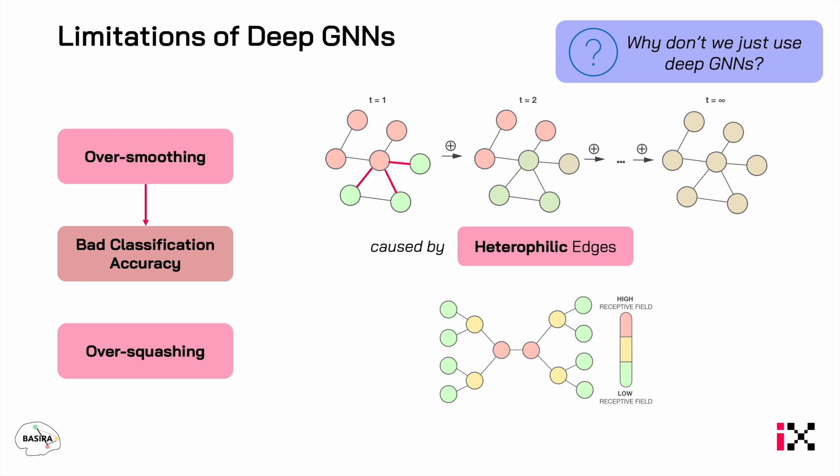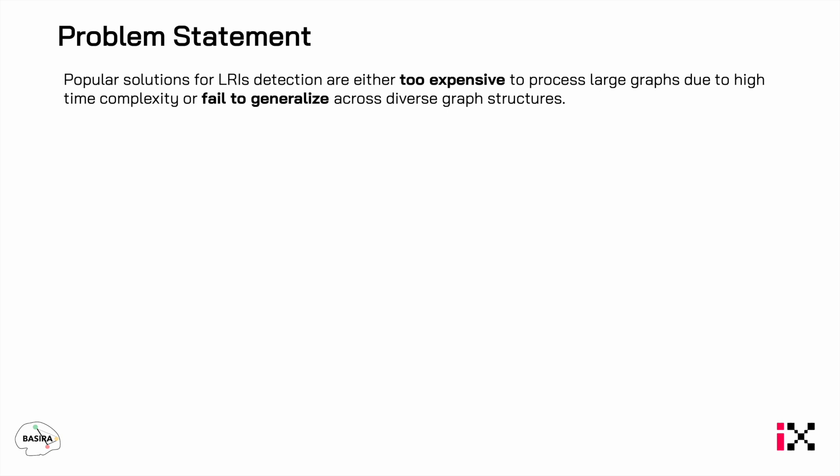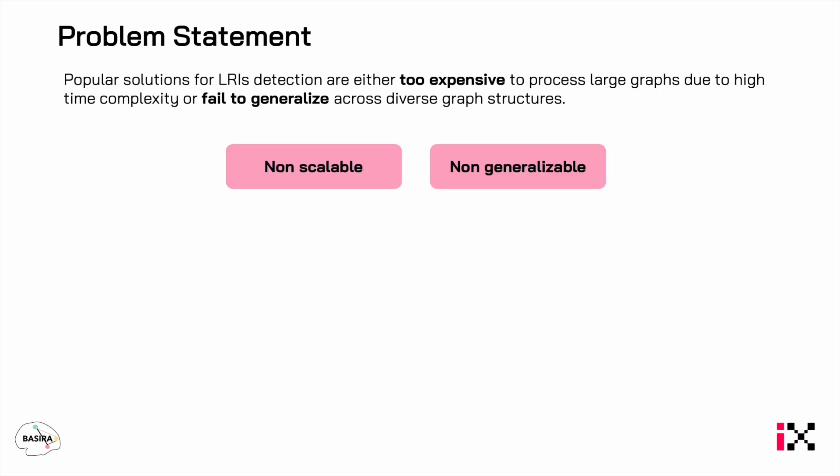Over-smoothing leads to bad classification accuracy and is caused by heterophilic edges. The other limitation is over-squashing, which happens when different areas of the graph are not well connected, also leading to bad accuracy, and it is caused by graph bottlenecks. While there are several popular solutions to solve the long-range interaction detection problem, these are either too expensive and not scalable, or fail to generalize across different graph structures.